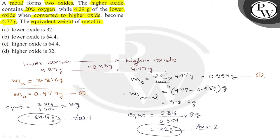So, what options are given to us? The equivalent weight of metal in lower oxide is 32, wrong. In lower oxide is 64.4 gram, absolutely correct, option B is correct.